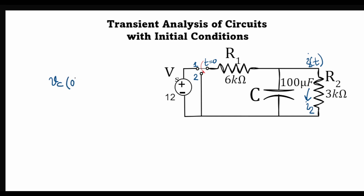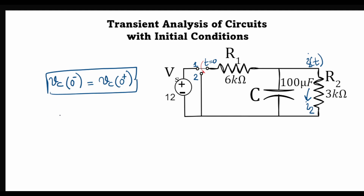the voltage across the capacitor, let's call it VC, cannot change instantaneously. So before the circuit is switched, if the voltage across the capacitor is VC(0⁻), then after switching, VC(0⁺) should be equal. This comes from the law of conservation of energy. The energy stored across a capacitor is given as (1/2)·C·VC², so VC cannot change instantaneously since there cannot be a buildup of energy in a dynamic system instantaneously.